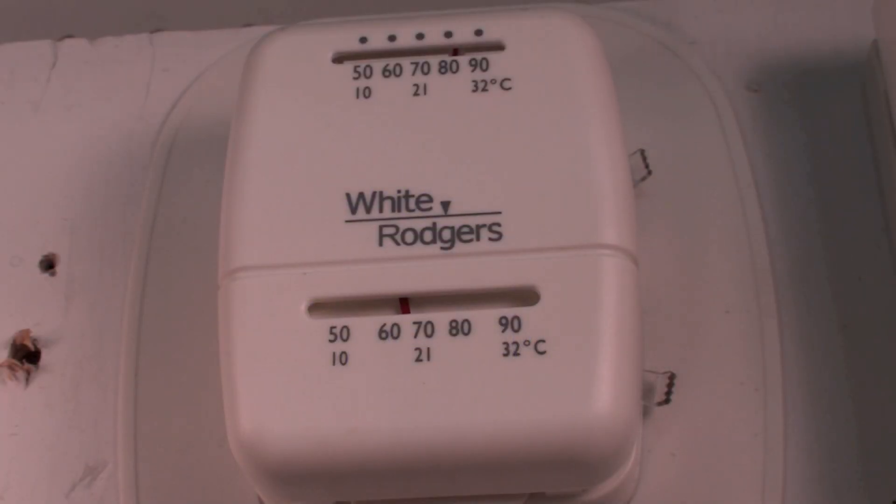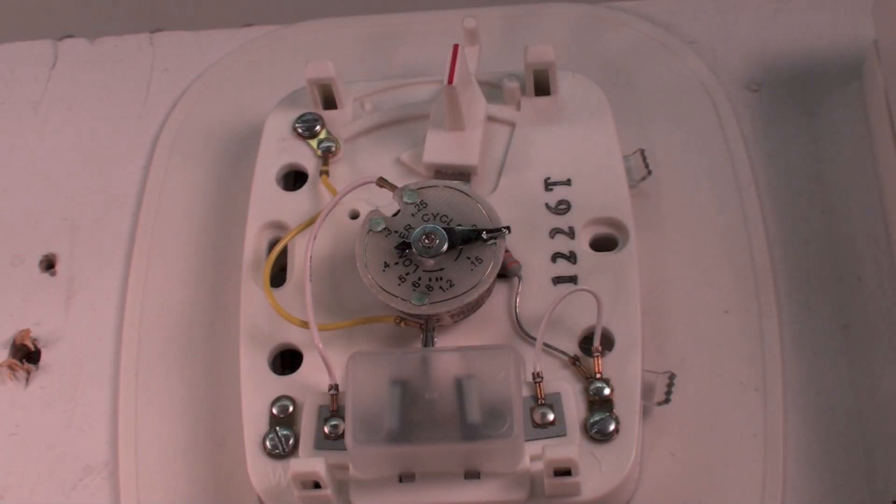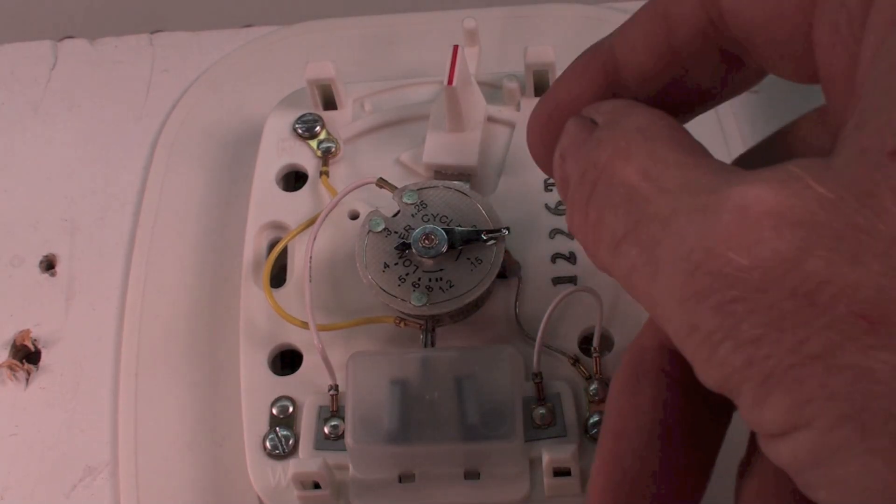Okay, I've been asked how to adjust the anticipator on these mechanical thermostats if you don't have a meter to check the amp draw of the control circuit. Take the cover off, and there's various ways these are set up, but this is a fairly common one here.